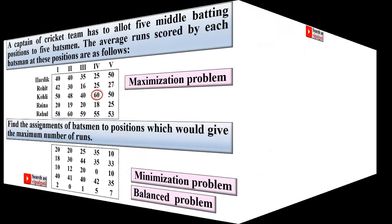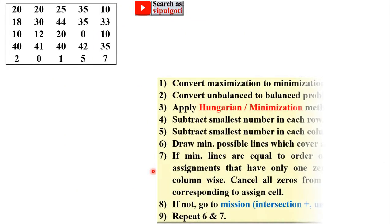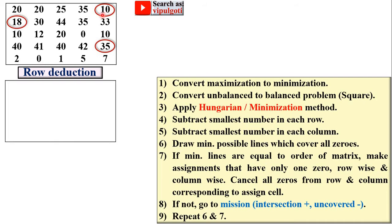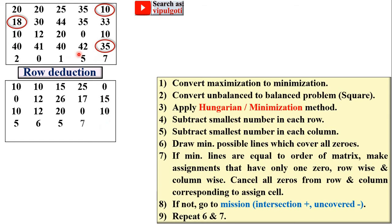First, follow the row reduction process: select the smallest number in each row. The smallest number in row 1 is 10, in row 2 is 18, in row 3 is 0 so skip it, in row 4 is 35, and in row 5 is 0 so skip it. Subtract 10 from all values of row 1, subtract 18 from all values of row 2, subtract 35 from all values of row 4, and rows 3 and 5 are unaffected.